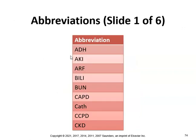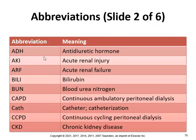Common abbreviations you might see in medical charts include: ADH (antidiuretic hormone), AKI (acute kidney injury), ARF (acute renal failure), bilirubin, BUN (blood urea nitrogen), CAPD (continuous ambulatory peritoneal dialysis), cath (catheter), CCPD (continuous cycling peritoneal dialysis), and CKD (chronic kidney disease).